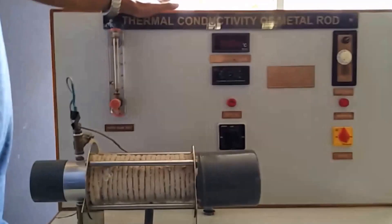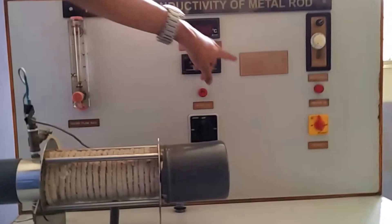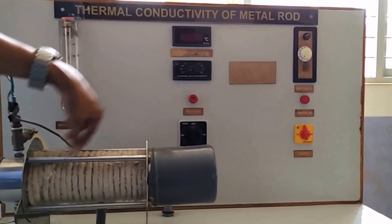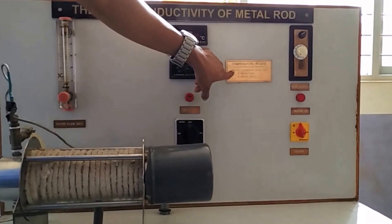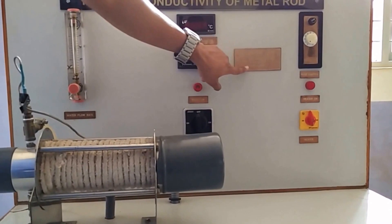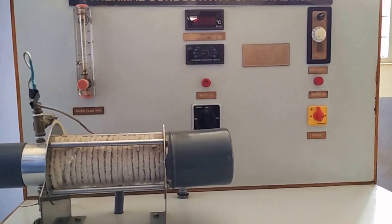This is the thermal conductivity of metal rod apparatus. Inside this we have a specimen made of aluminum rod. On the surface of the aluminum rod we have 4 thermocouples: T1, T2, T3, T4. T5 is the water inlet and T6 is the water outlet.